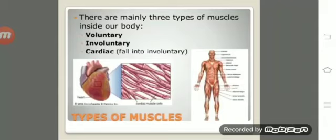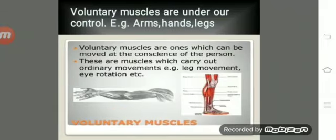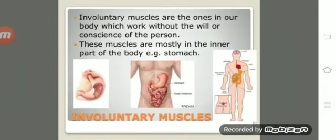There are mainly three types of muscles in our body: voluntary muscles, involuntary muscles, and cardiac muscles. Voluntary muscles are those which can be moved at the conscious will of the person — they are under human control. For example, you can move your hands and legs when you want. These muscles carry out ordinary movements like leg movements and eye rotation.